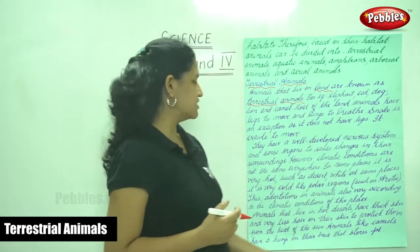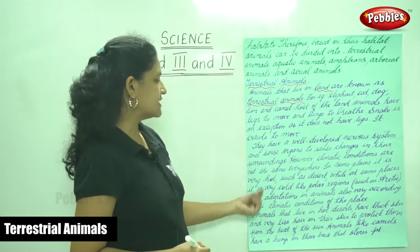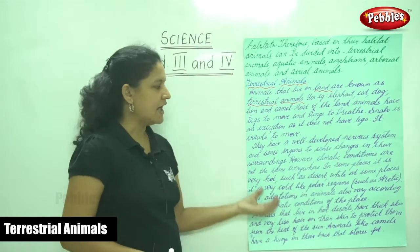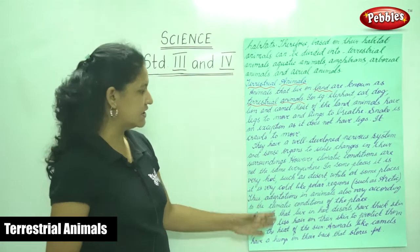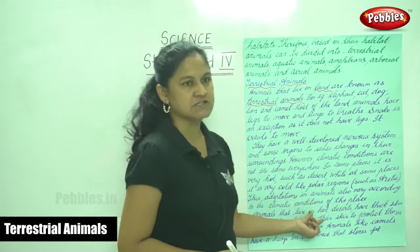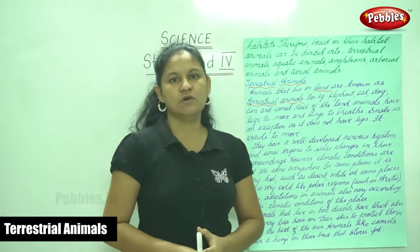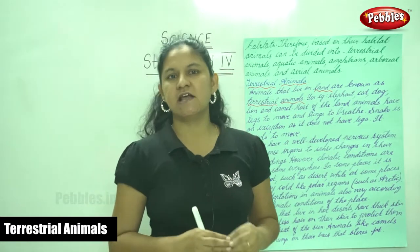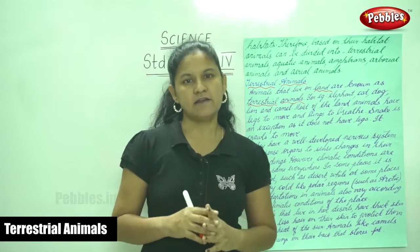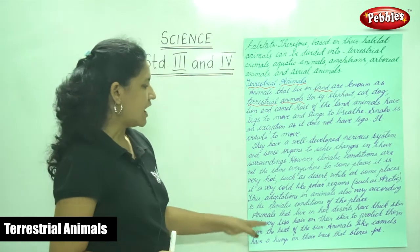Climatic conditions are not the same everywhere — the weather keeps changing. In some places it is very hot, such as deserts, while in other places it is very cold, like the polar regions such as the Arctic. Thus, adaptations in animals also vary according to the climatic conditions of the place. Animals are able to adjust themselves according to these climatic conditions.